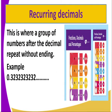What we are now required to do is deal with the subtopic of recurring decimals, whereby these are a group of numbers after the decimal point that repeat without ending. For example, you can have a number like 0.323232. As you can see, 32 is repeating itself, so we say 32 is recurring.